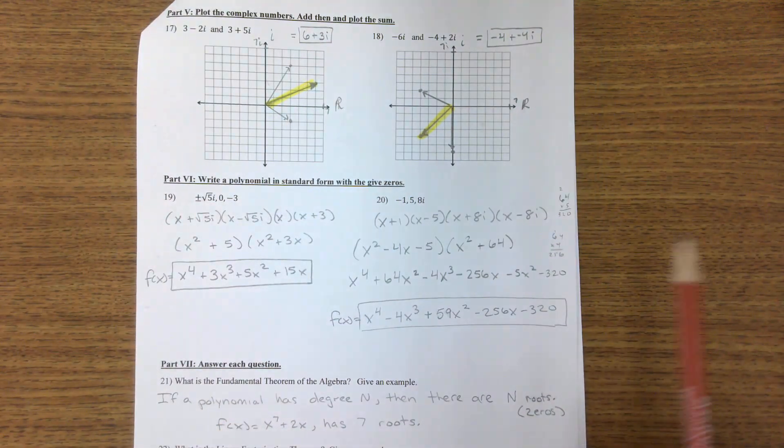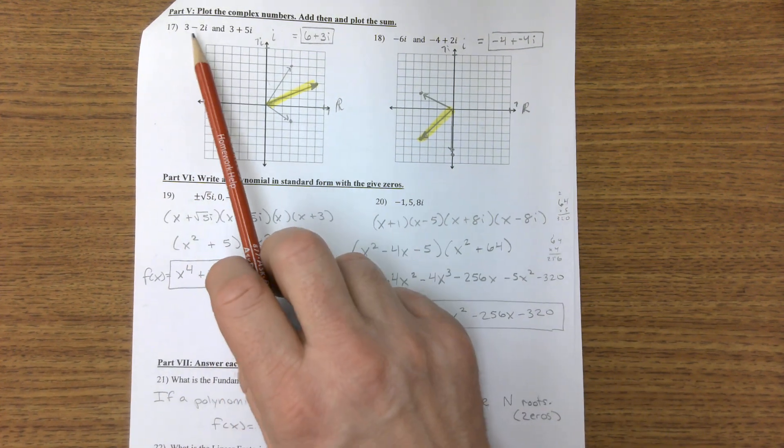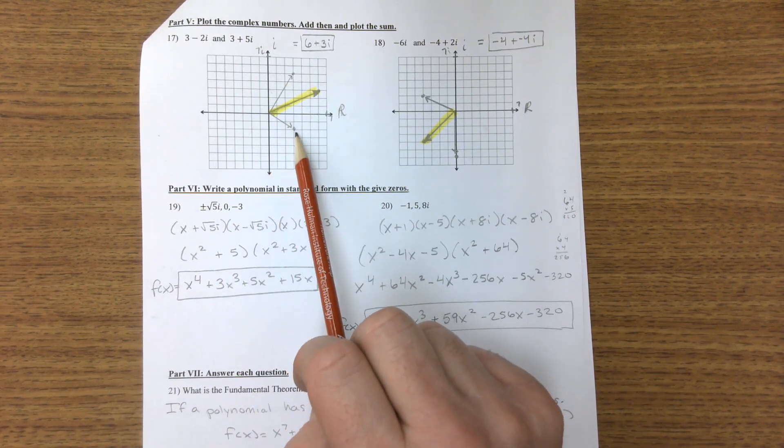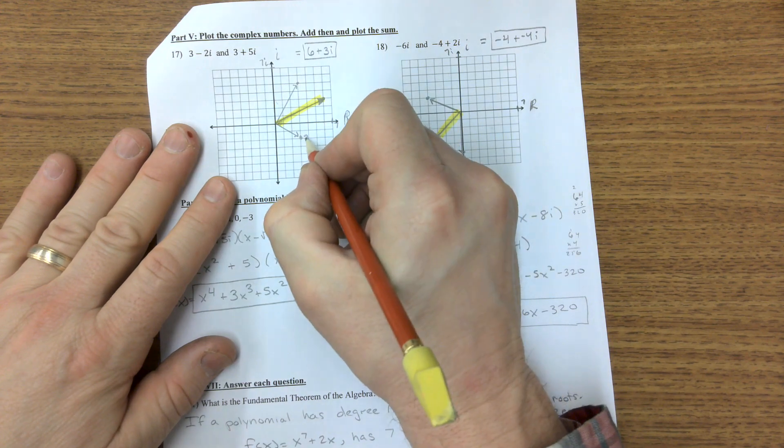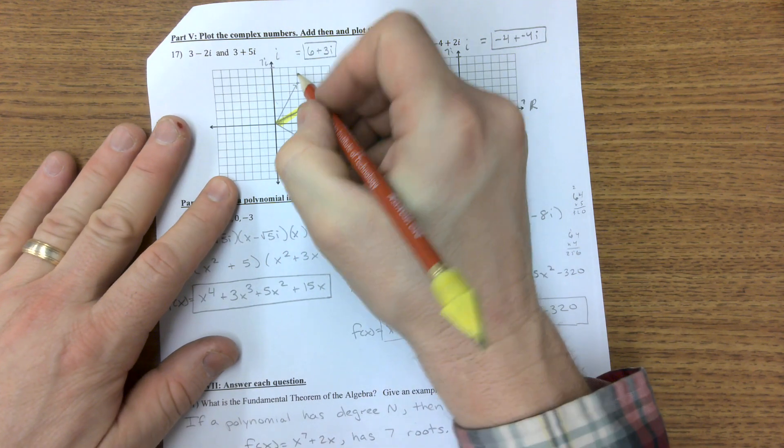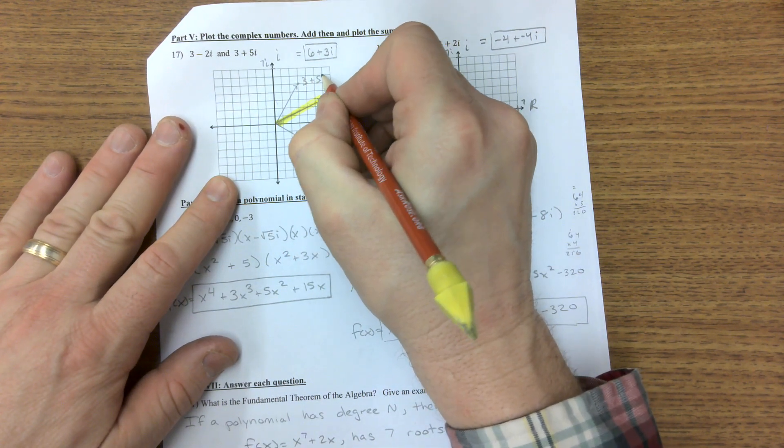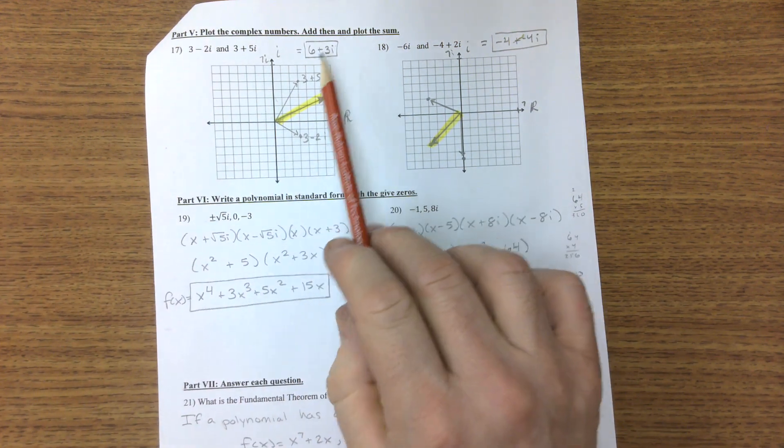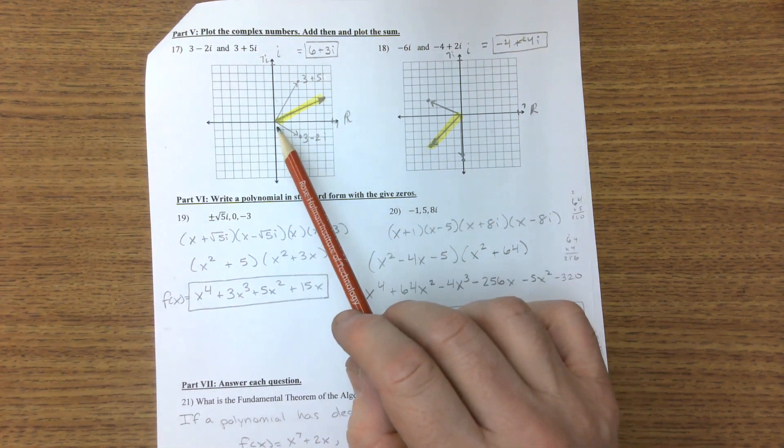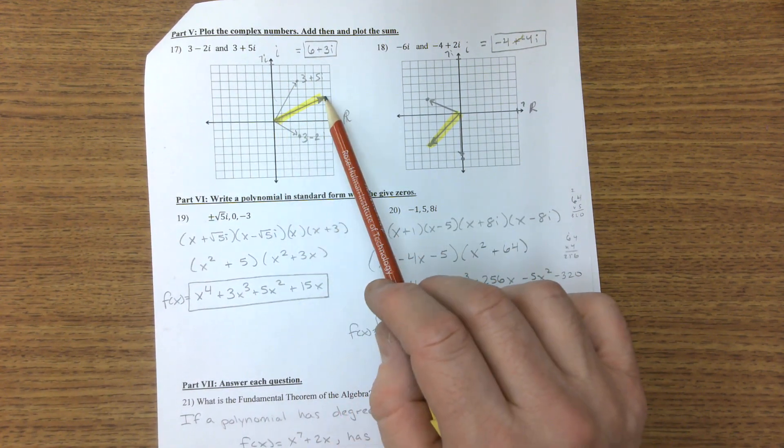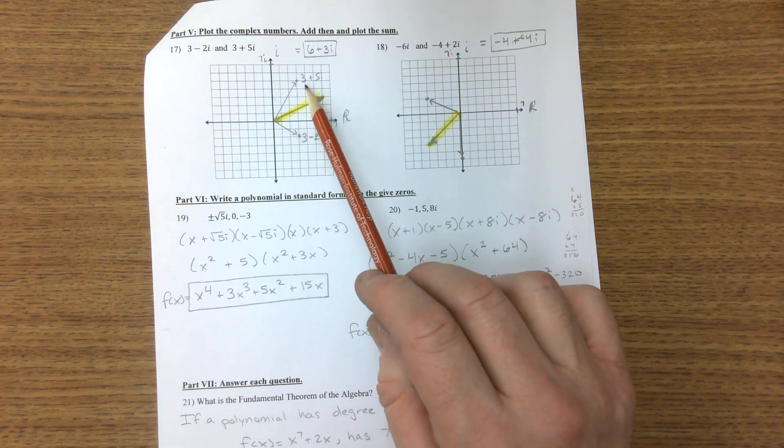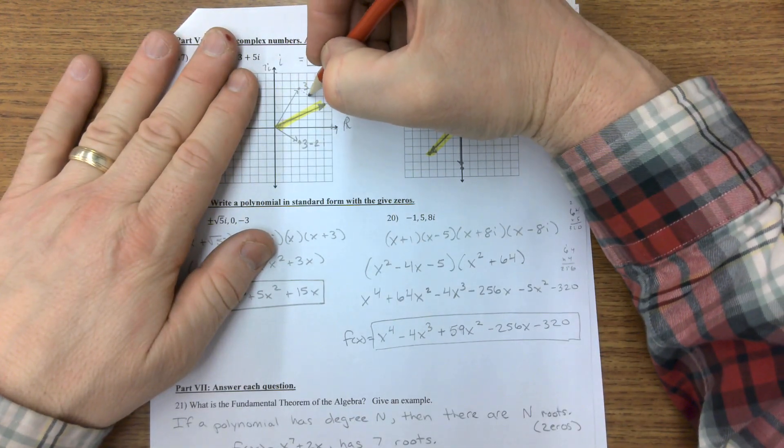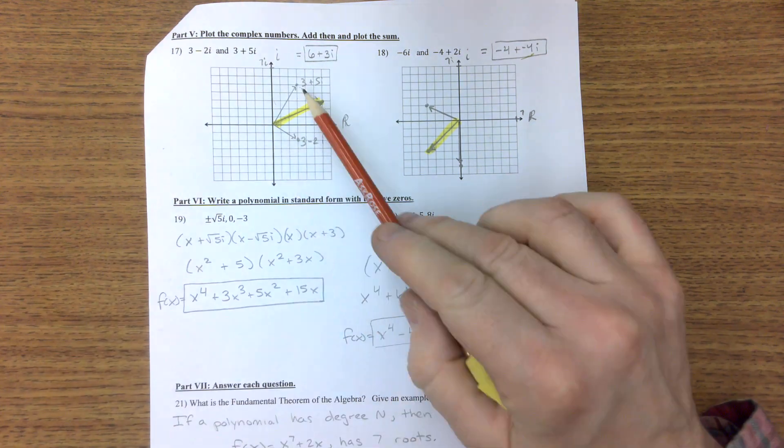I'm going on to this back. First, number three, 3 minus 2i is down here. This is 3 minus 2i. This is 3 plus 5i. If you add those together, you have 6 plus 3i. First vector, second vector, sum of the vectors. This vector could be brought up here and you do the first vector then the second vector. You get there.